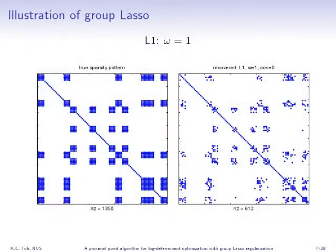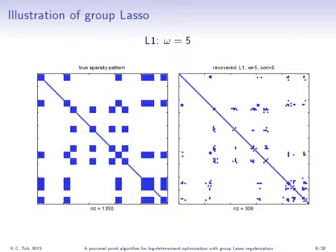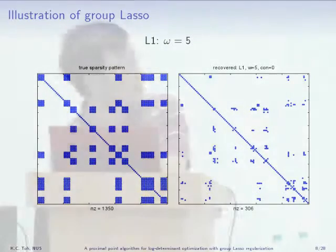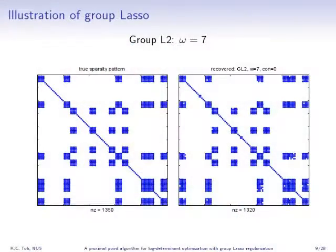Let me give an illustration of why group lasso may be a good idea. Here I have a covariance matrix with a certain sparsity pattern. This is what I can recover using L1 regularization for a weight value of 0.5 and for a weight value of 1.5 — you can see that the recovered estimator does not match the true solution very well. But if I use a group lasso type of regularization with the L2 norm, the sparsity pattern actually matches the true solution pretty well.